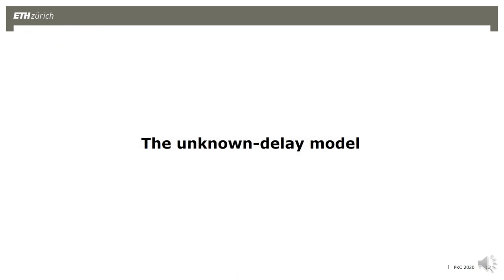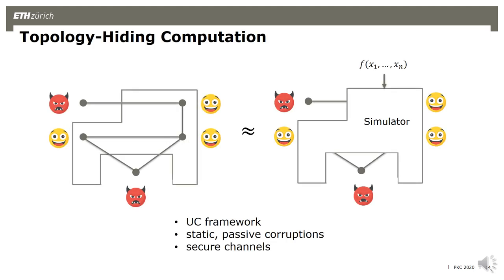We start with the standard model. The parties communicate via a network functionality which has a graph inside and delivers messages along the edges. You can think of these channels as really secure channels — the adversary doesn't even know whether a channel exists or whether a message was sent. Only messages to corrupted parties are sent to the adversary. In the ideal world, we replace this network functionality by the simulator, who receives the output of the function and is supposed to emulate the messages sent to corrupted parties. The graph is inputted by the environment directly at the beginning of the computation.